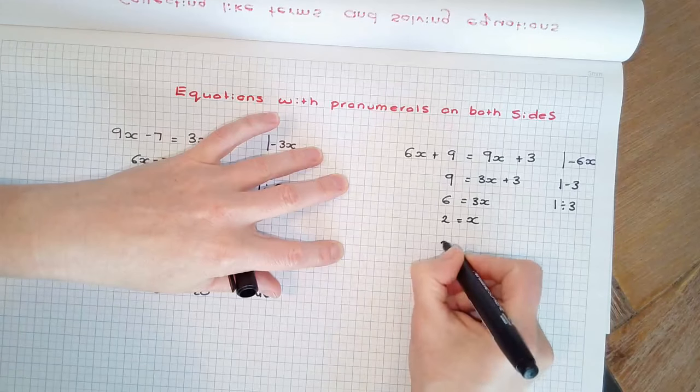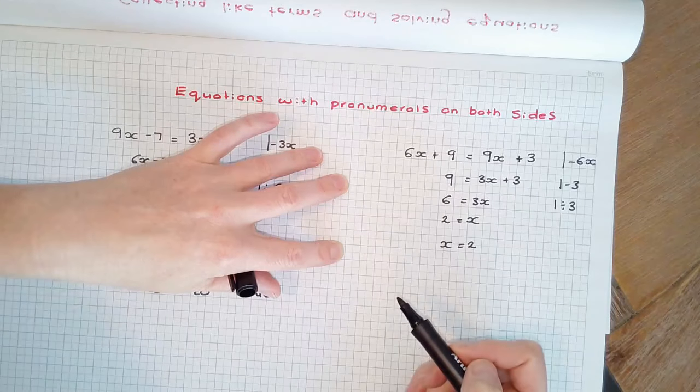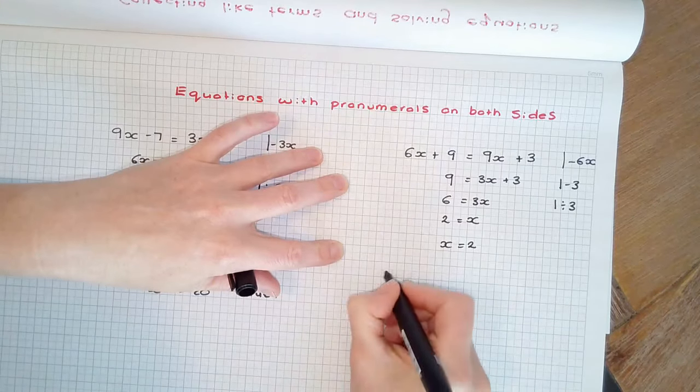We can then simply write our final answer as x equals 2. We just flip the left-hand side to the right-hand side and the right to the left. Checking our solution,